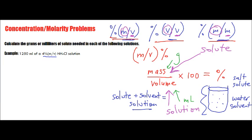Let's go to the first example. We have: calculate the grams or milliliters of a solute needed in each of the following solutions. We have 1,250 milliliters of a 4% mass-volume solution of NH4Cl, ammonium chloride. The entire solution is representative of whatever's at the bottom. So this mass-volume is this part of the equation, and when we divide them, it is always going to be divided by 100, giving us some kind of a percent.